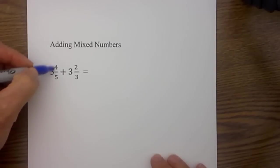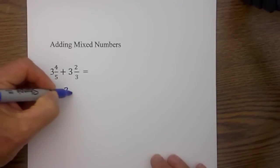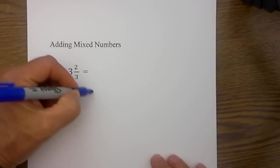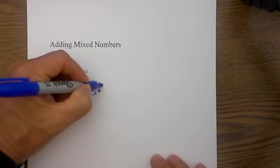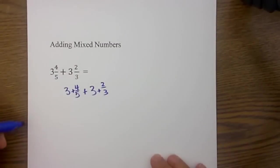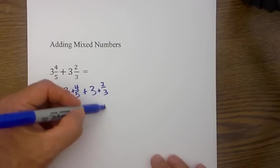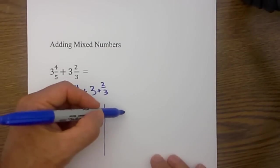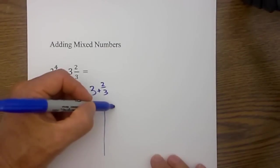First to visualize, 3 and 4 fifths is actually 3 plus 4 fifths and 3 and 2 thirds is actually 3 plus 2 thirds. So what I do is I draw a line and I put the fractions on one side of the line and the whole numbers on the other.